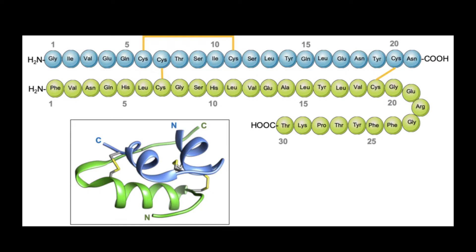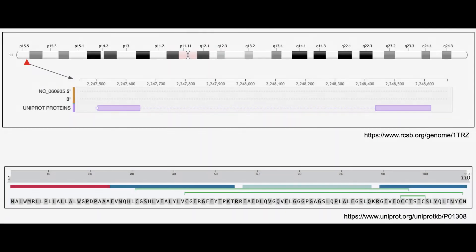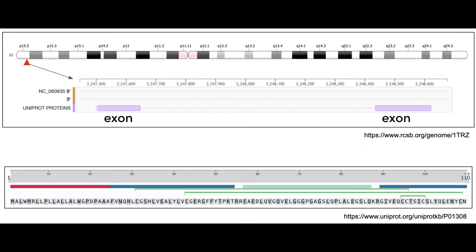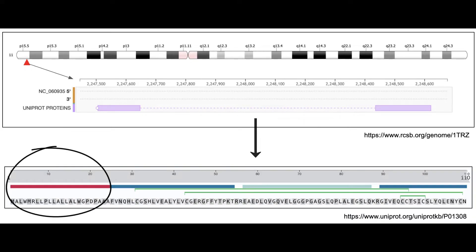The A and B chains of insulin are synthesized in cells as one single piece. The insulin gene is located on the short arm of chromosome 11. The translated portion of the gene includes two exons separated by an intron. Once the intron is removed, the mature mRNA codes for pre-pro-insulin. The first 24 amino acids of the translated protein form the signal or pre-peptide.